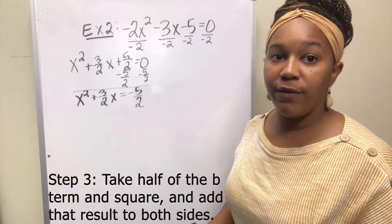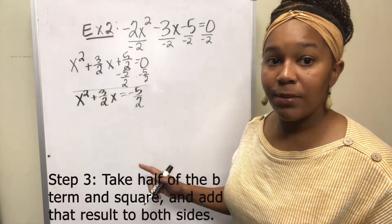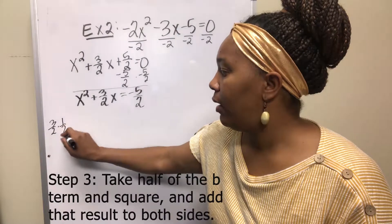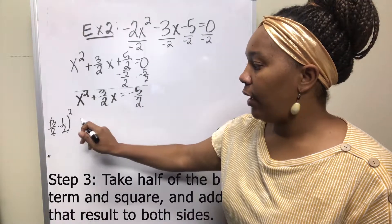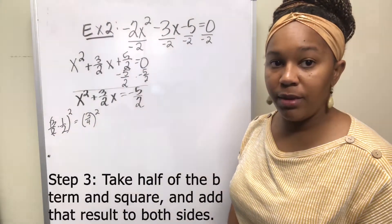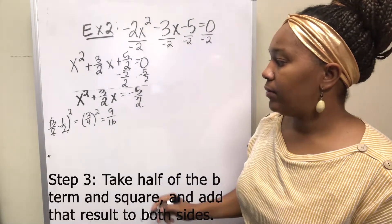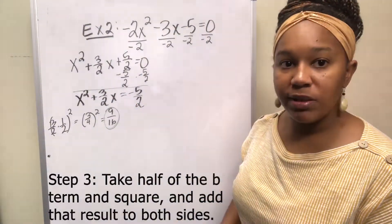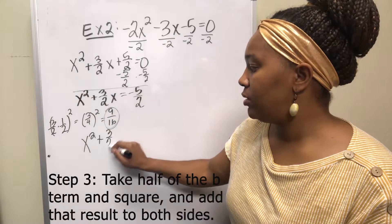Step three: complete the perfect square by taking half of the b term and squaring it. Since our b is a fraction — 3 halves — to take half of it we multiply by 1 half. So 3 halves times 1 half is 3 fourths. Then 3 fourths squared means squaring the numerator and denominator, giving us 9 over 16. This is our b over 2 squared — 9 over 16 — and we want to add it to both sides.